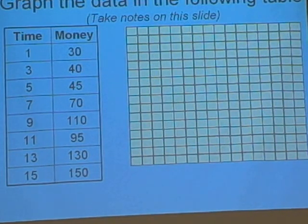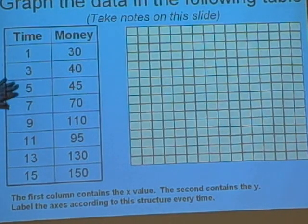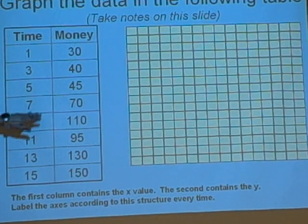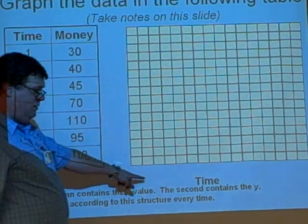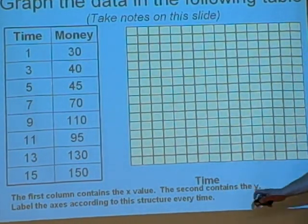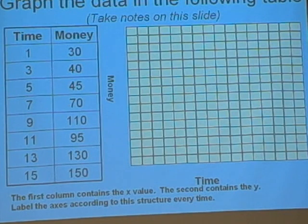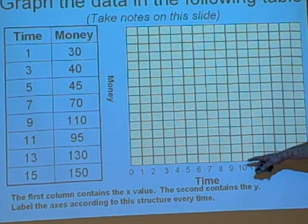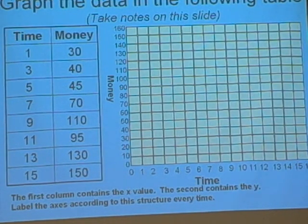Here we have a table of time and money. So we have our graph set up. To graph that, we're going to need the first column here. The first column that comes first is the x-values. The second column is going to be your y-values. So we need to label the x-axis with time and the y-axis with money. Put in a good interval here. Looks like we're going up to 15 here. Looks like counting up by 10s works well for the intervals on the y-axis.